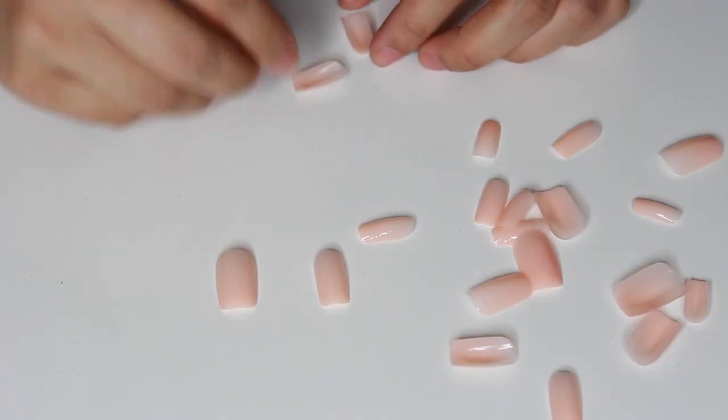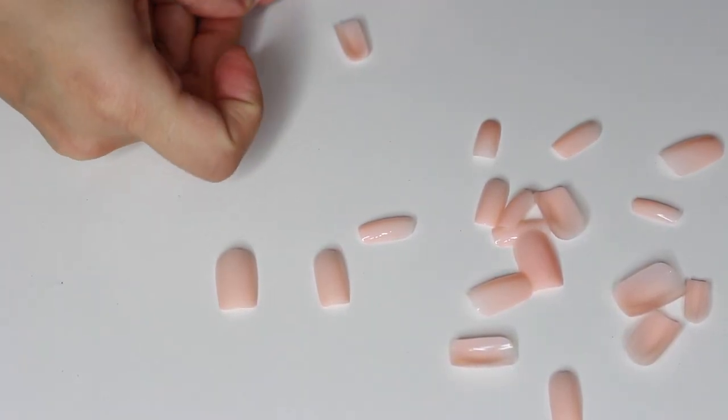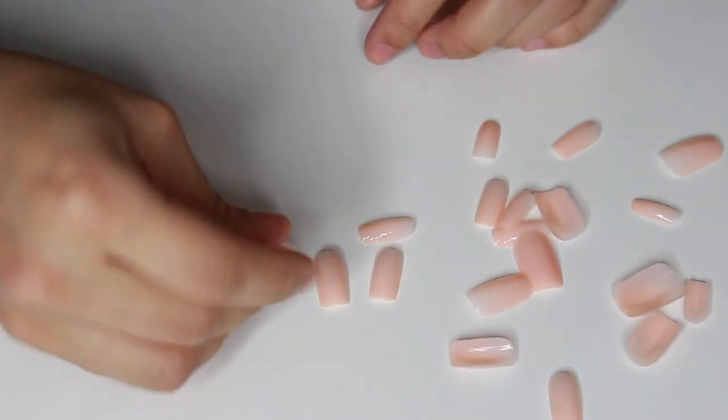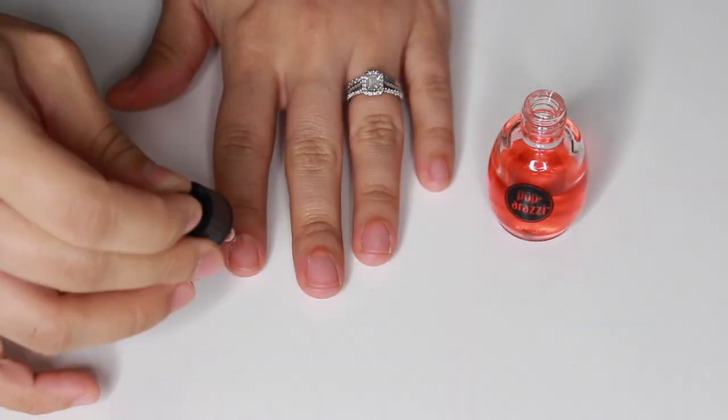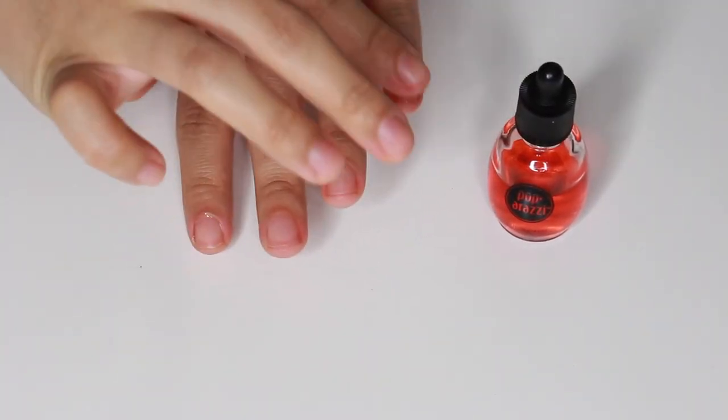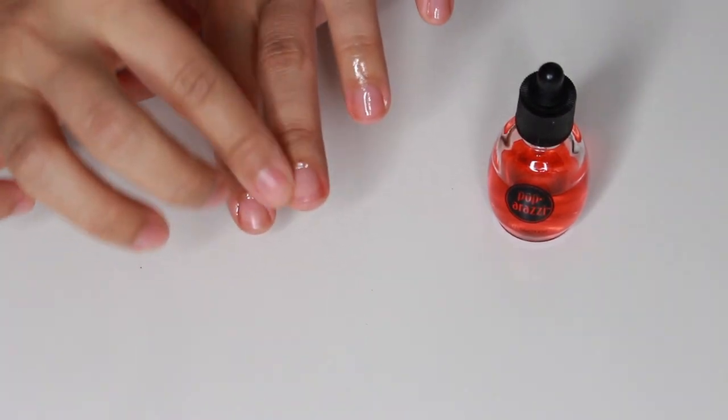A pro tip is that you want the nail to actually be a little bit smaller. You don't want it to be too large and cover the whole nail bed because then it really looks unnatural.